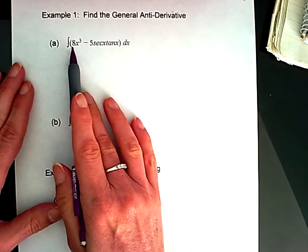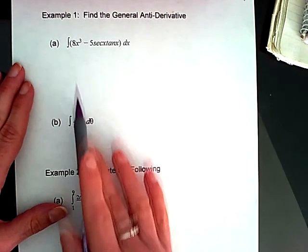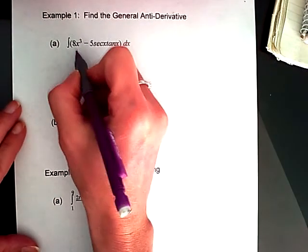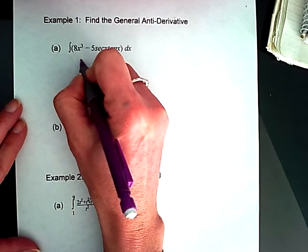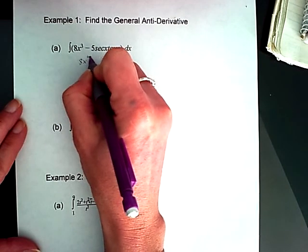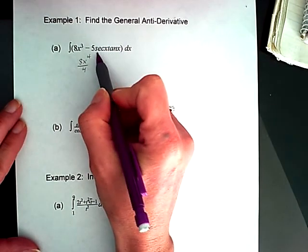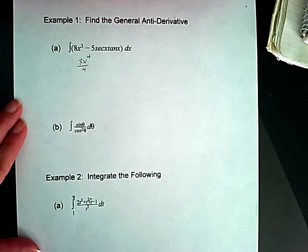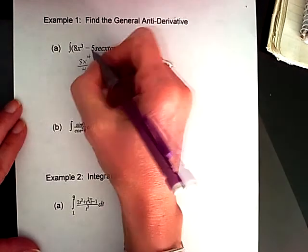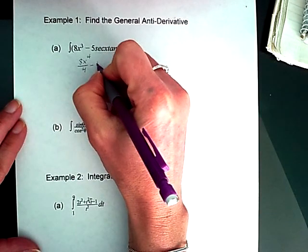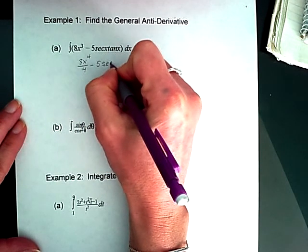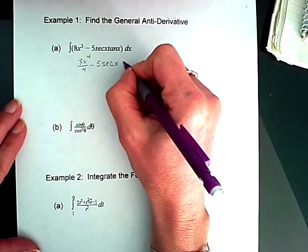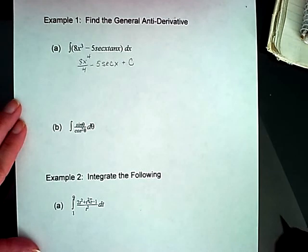For our first example, we're looking at two general antiderivatives because they are indefinite integrals. So we're going to use our antiderivative functions. I'm going to start with 8x to the fourth over 4. Understanding that the antiderivative of secant x tan x is just secant x, that gives my second term to be minus 5 secant of x.